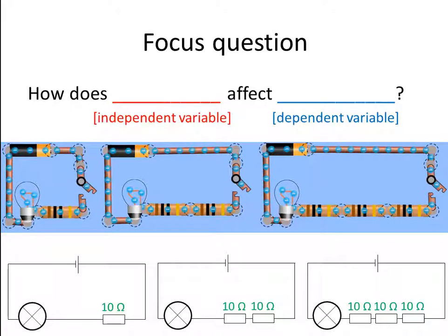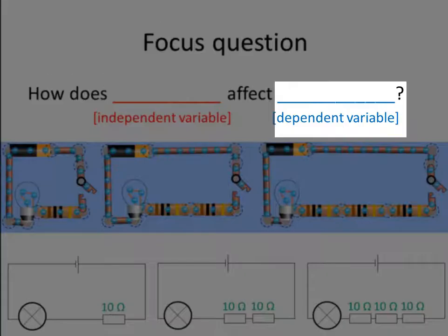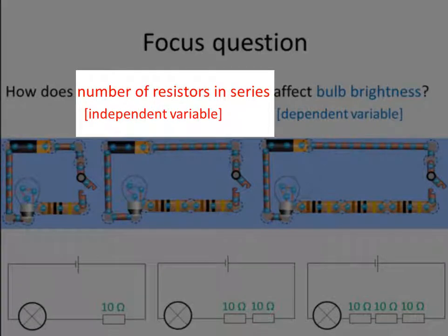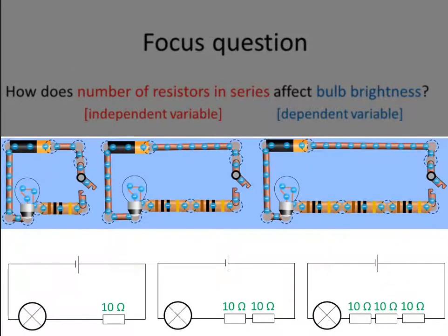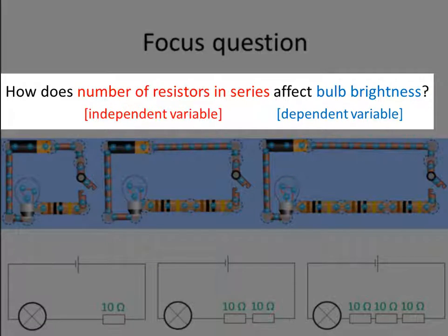In this investigation, what am I changing between the three circuits? What is my independent variable? And what am I going to measure — what will my dependent variable be? How can I write the question of this investigation? I'm varying the number of resistors in series between the three treatments, and I'm going to see how that affects the brightness of the bulb in each circuit. So the question is: how does number of resistors in series affect bulb brightness?